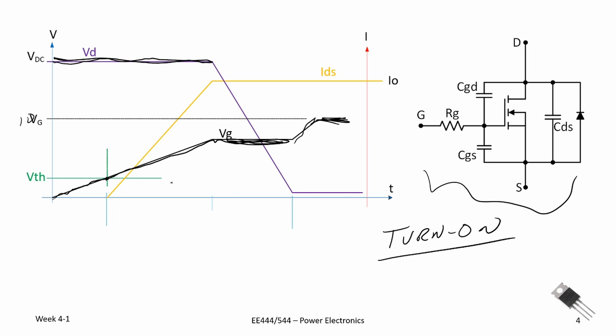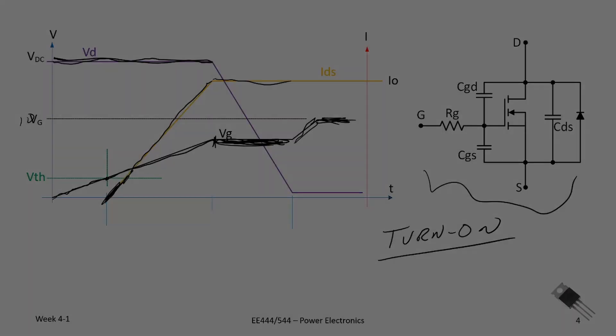For example, if our gate-to-source voltage was 10 volts and our threshold voltage was possibly one and a half, two, three volts, we would not see current conducting through the drain and source until we passed the threshold. It would continue to rise. It would come up to a point at which the gate voltage holds constant during the Miller plateau and then rises up. So that's the turn-on characteristic.